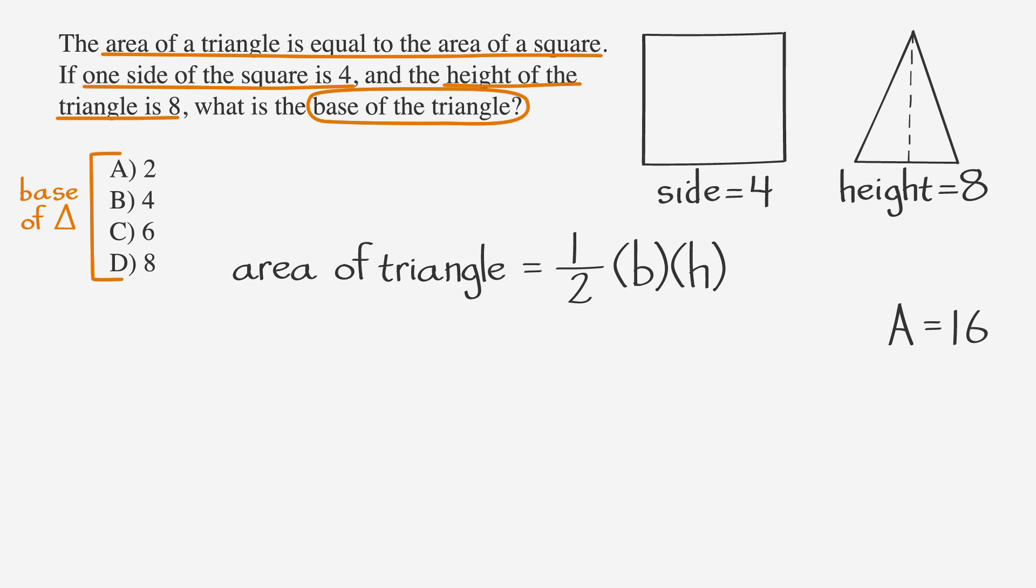The area of a triangle, which is given in the formulas box at the beginning of the test, is 1 half times the base times the height. We can plug in 16 for the area and 8 for the height. So, we have 16 equals 1 half times the base times 8. Multiplying 1 half and 8 gives us 16 equals 4 times the base. If we solve for the base by dividing by 4, we get that our base is equal to 4.